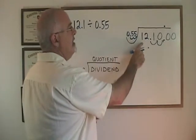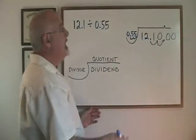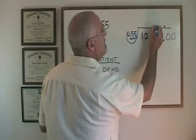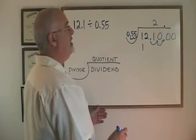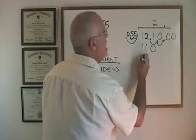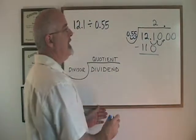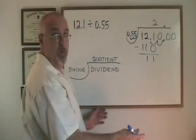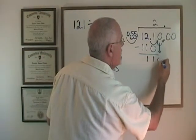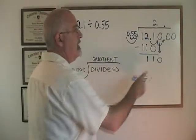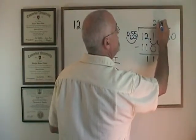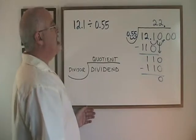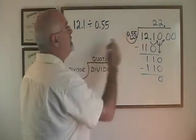To start: does 55 fit into 1? No. Does 55 fit into 12? No. Does 55 fit into 121? No. I'm going to have to slide one of these zeros down and turn my 11 into 110. Does 55 fit into 110? Yes — twice exactly. So right here above that 0, I put a 2. 2 times 55 is 110. I subtract and I get 0, so I know I am finished. This means the answer to 12.1 divided by 0.55 is equal to 22.